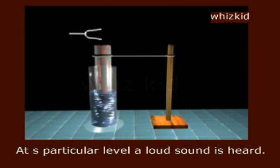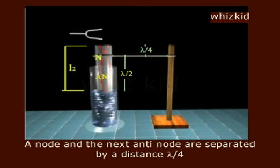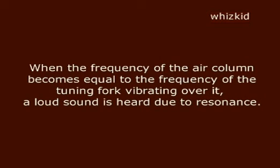At a particular level, a loud sound is heard. A node and the next antinode are separated by a distance lambda by 4. When the frequency of the air column becomes equal to the frequency of the tuning fork vibrating over it, a loud sound is heard due to resonance.